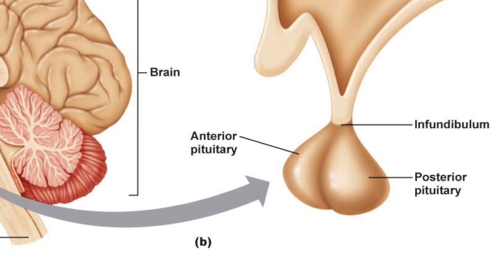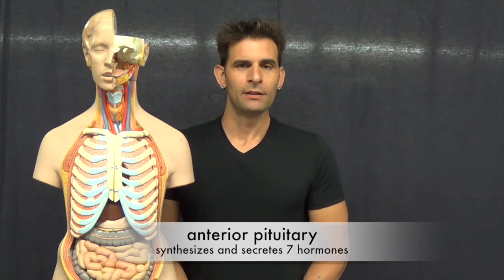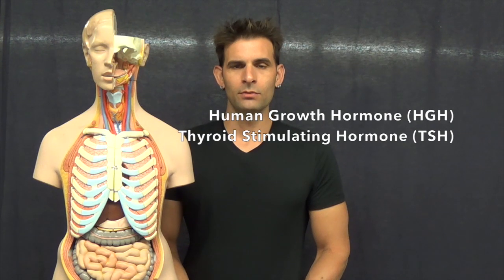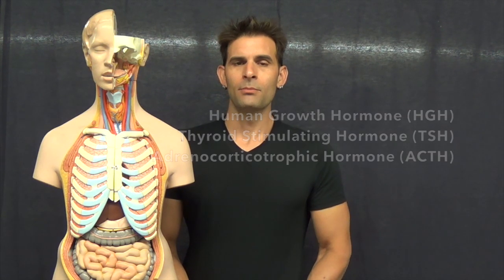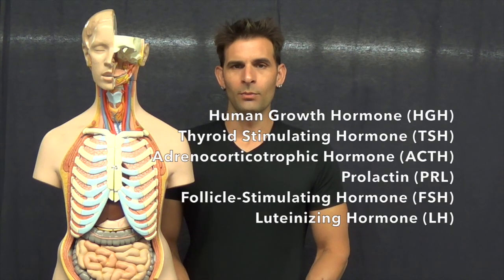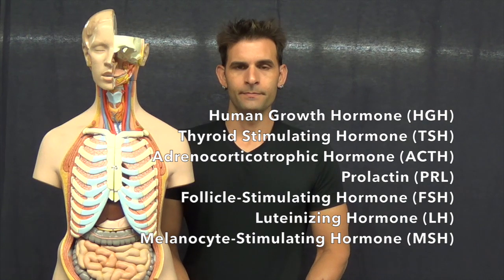The pituitary gland is divided into an anterior and posterior pituitary. The anterior pituitary synthesizes and secretes seven hormones: human growth hormone, thyroid stimulating hormone, adrenal corticotropic hormone, prolactin, follicle stimulating hormone, luteinizing hormone, and melanocyte stimulating hormone.